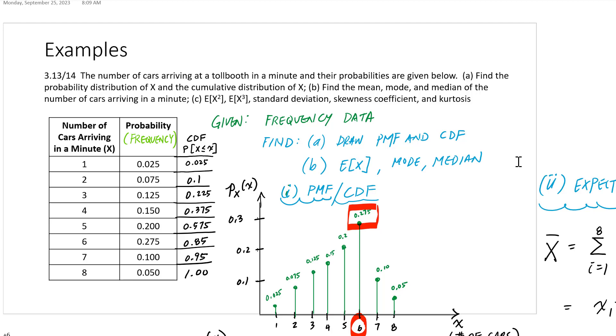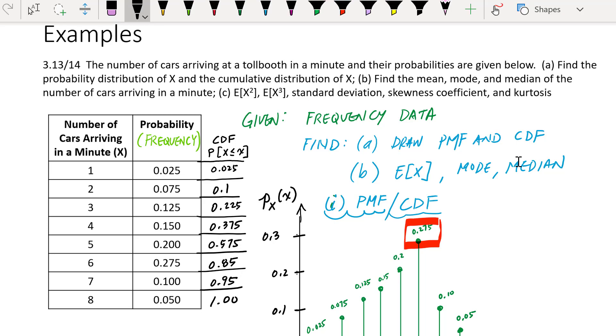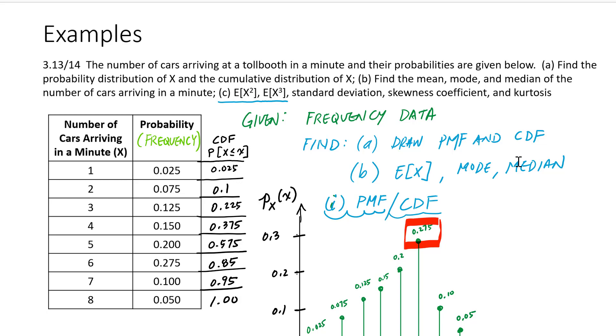Alright, so now this is part two of this example where we're going to finish off with this information about cars arriving at some location in a minute. What we want to do is calculate part c, which is these moments of this random variable when m equals 2, m equals 3.